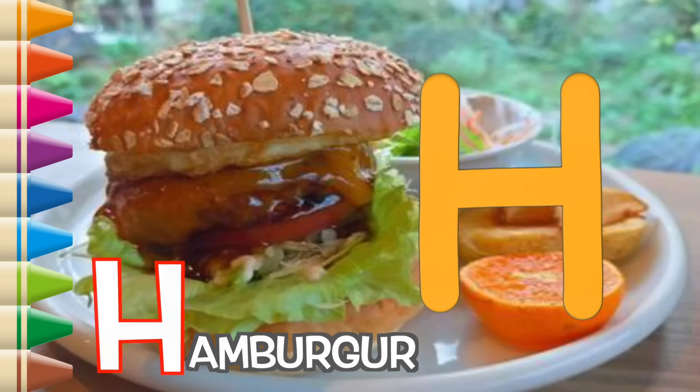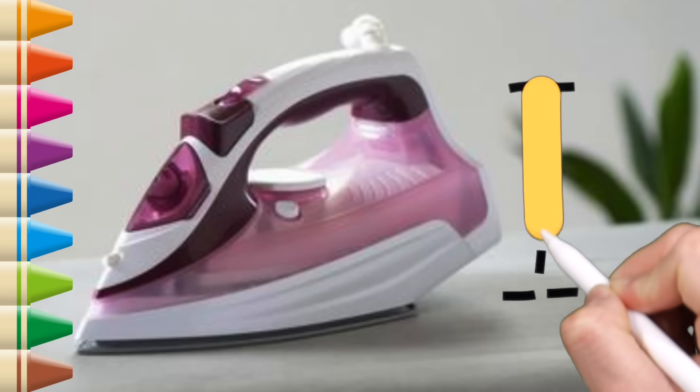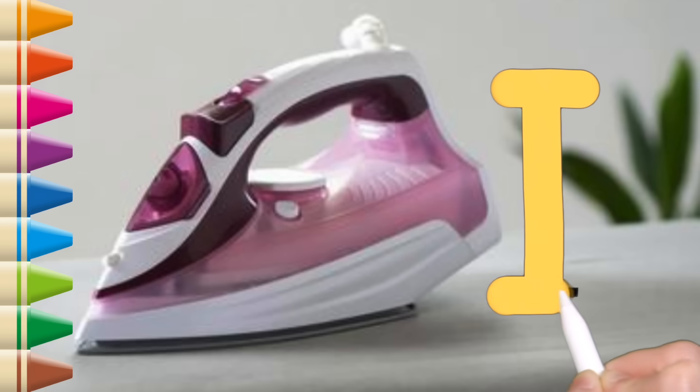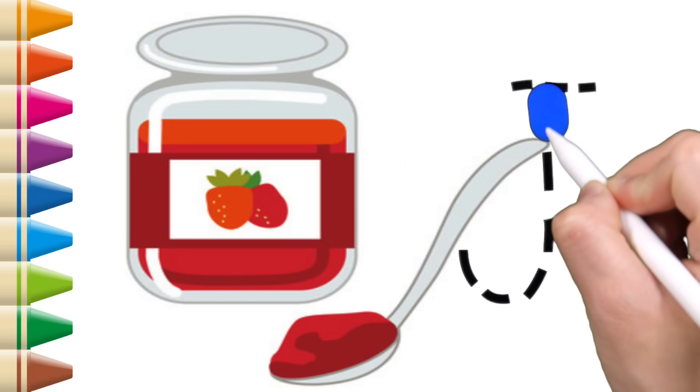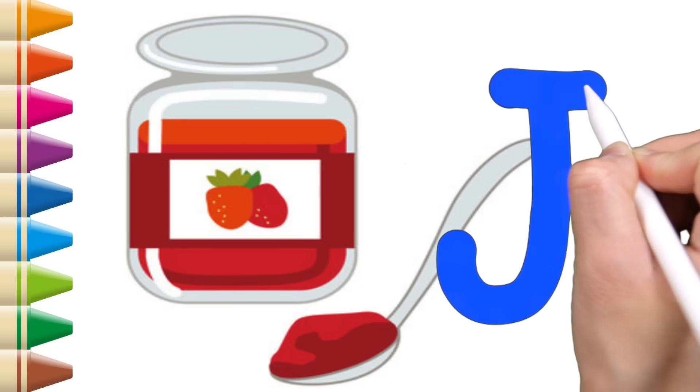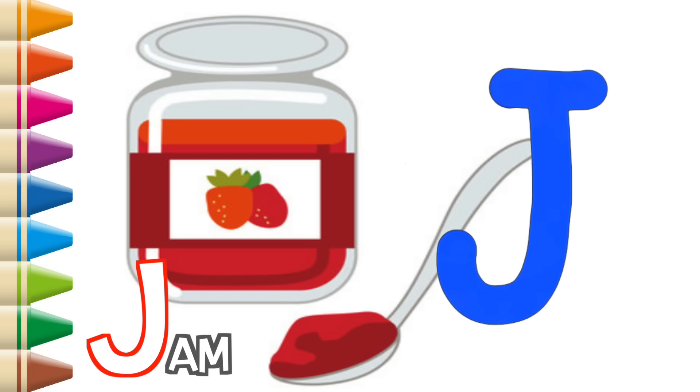H, H is for Hamburger. A, B, C, D, E, F, G, H. I, I is for Iron. U, R, S, T, U, V, W. J, J, J is for Jam.